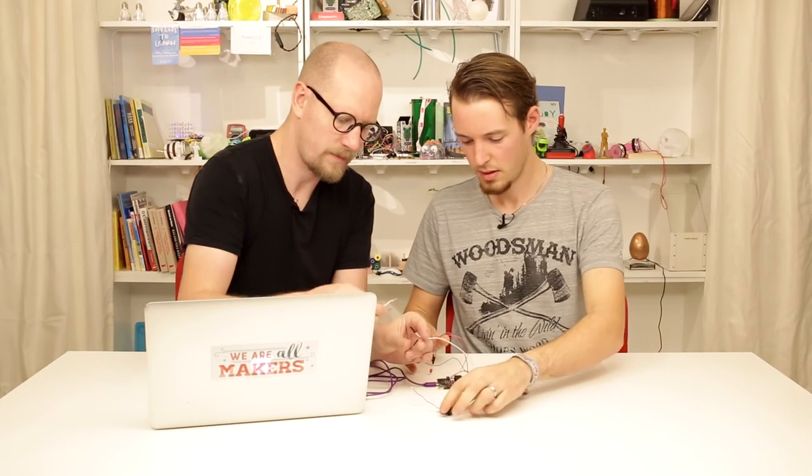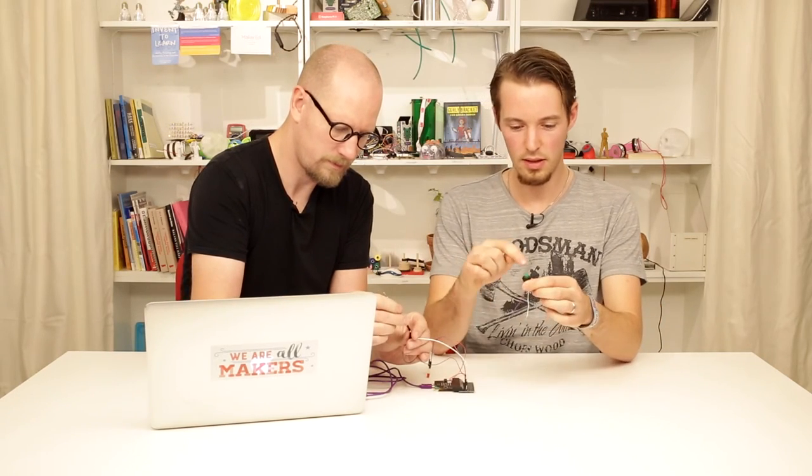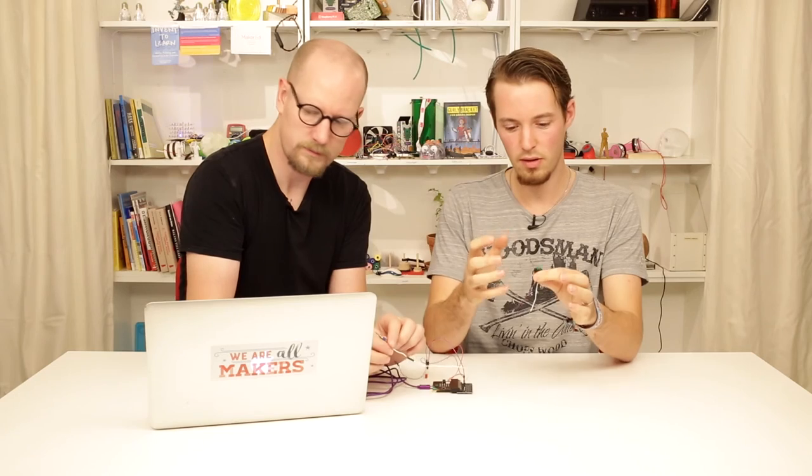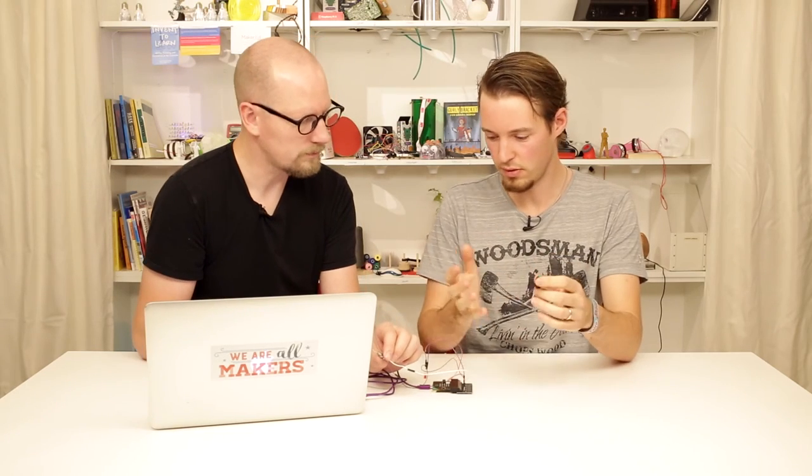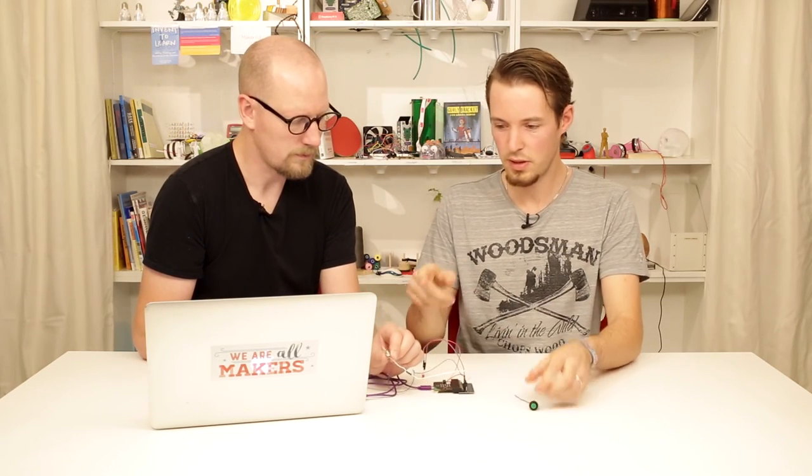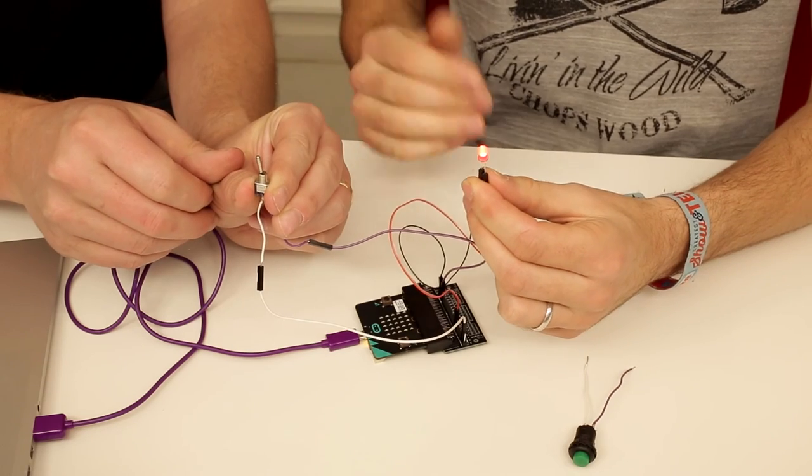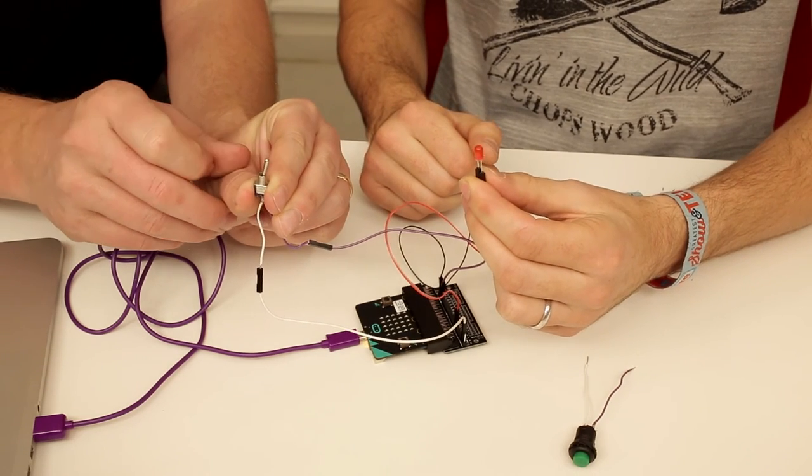Now we could exchange the button to the switch. What's the difference between a button and a switch? What a button does is as long as you press down, it connects these two wires together, but as soon as you let go it's disconnected and turns off the LED. But with a switch, it stays in the same state. Currently it's off, and if we flip the switch it's in the on position and it stays there.